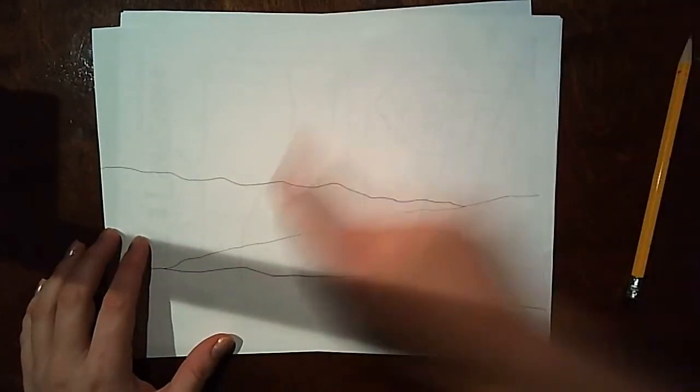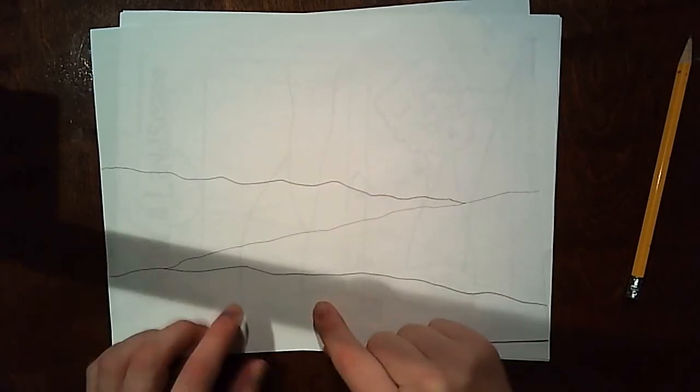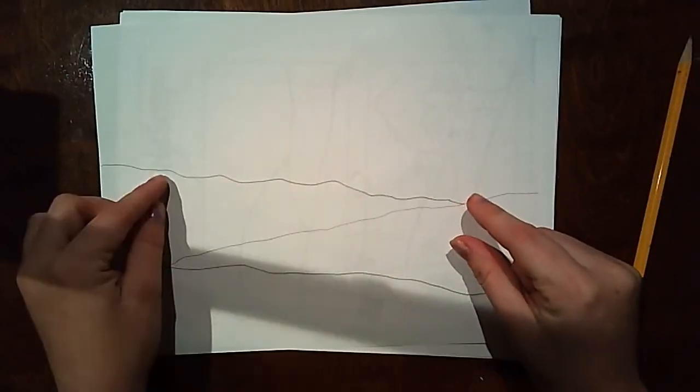So let's begin together. We are going to start by drawing three sections. The foreground, middle ground, and background. So please gather a white piece of paper, a pencil, and an eraser if you need one.